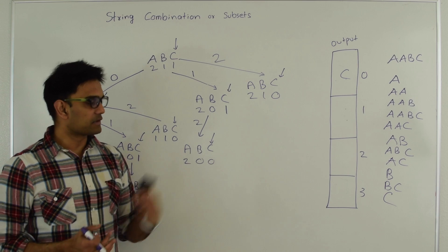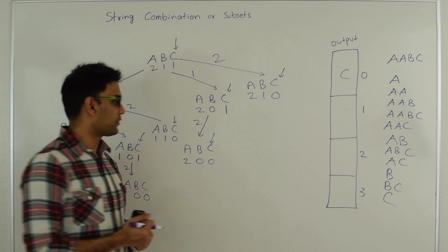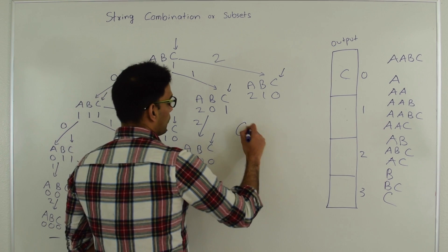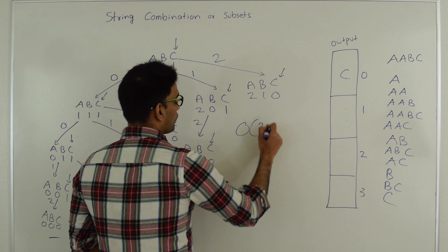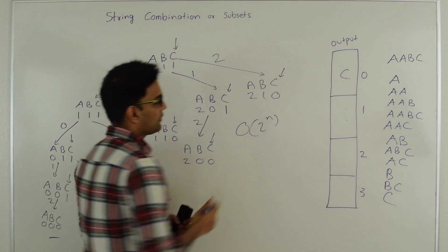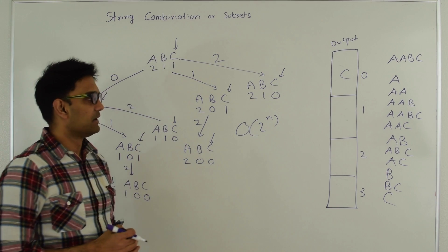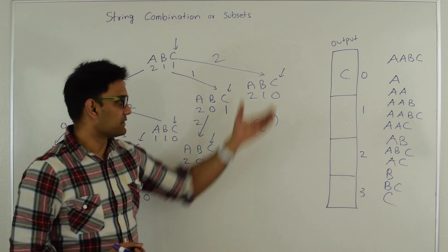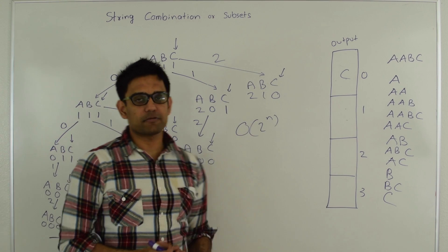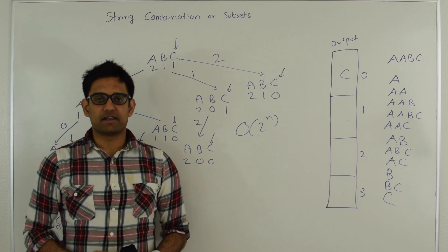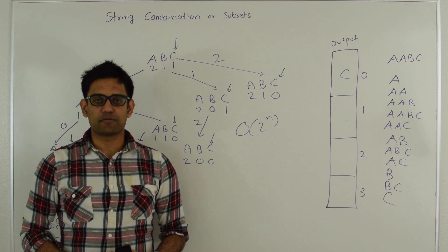The time complexity for this algorithm will be exponential: O(2^N) where N is the size of the string. The space complexity will be O(N). Next let's look at the code for this algorithm.